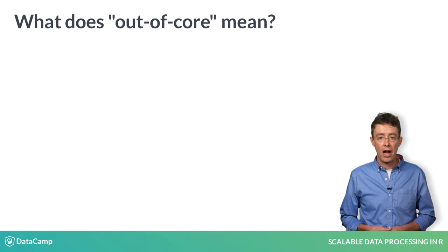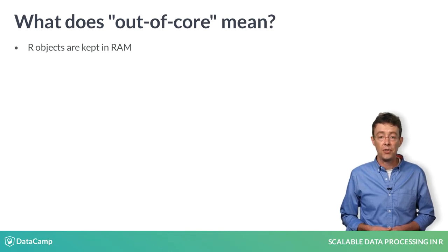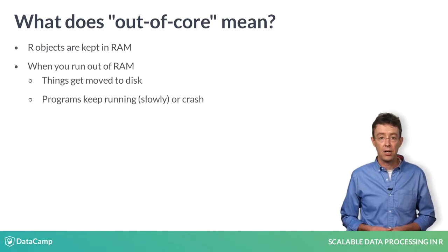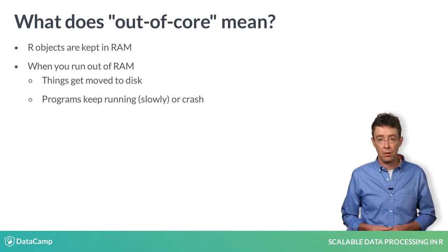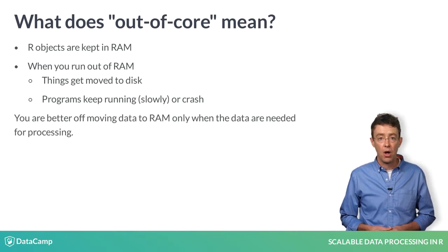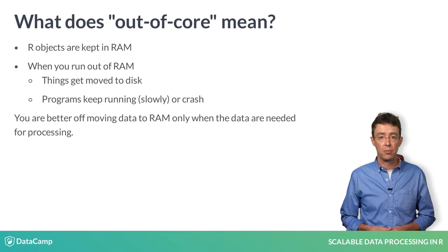As mentioned before, our objects are kept in RAM. This is much faster than using the disk, but there is less RAM than disk. When you run out of RAM, your machine may start moving things to disk to make space. Your programs may keep running, but they will become slow. In most cases, you are better off moving data to RAM only when it is necessary for processing. This is sometimes called out-of-core computing, and it's the strategy we're going to use to process data.